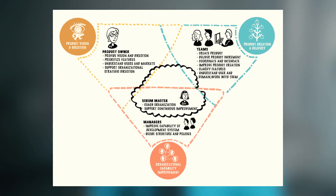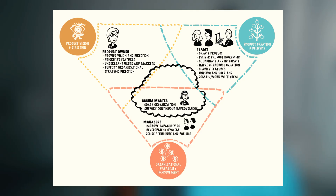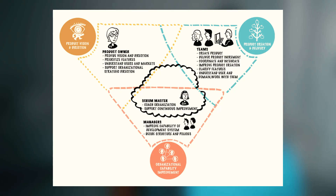Very similar to how Scrum works. The Scrum master coaches the organization and supports continuous improvement — same as in the Scrum framework. Now, the new role: managers. They improve the capability of the development system and decide structure and policies.